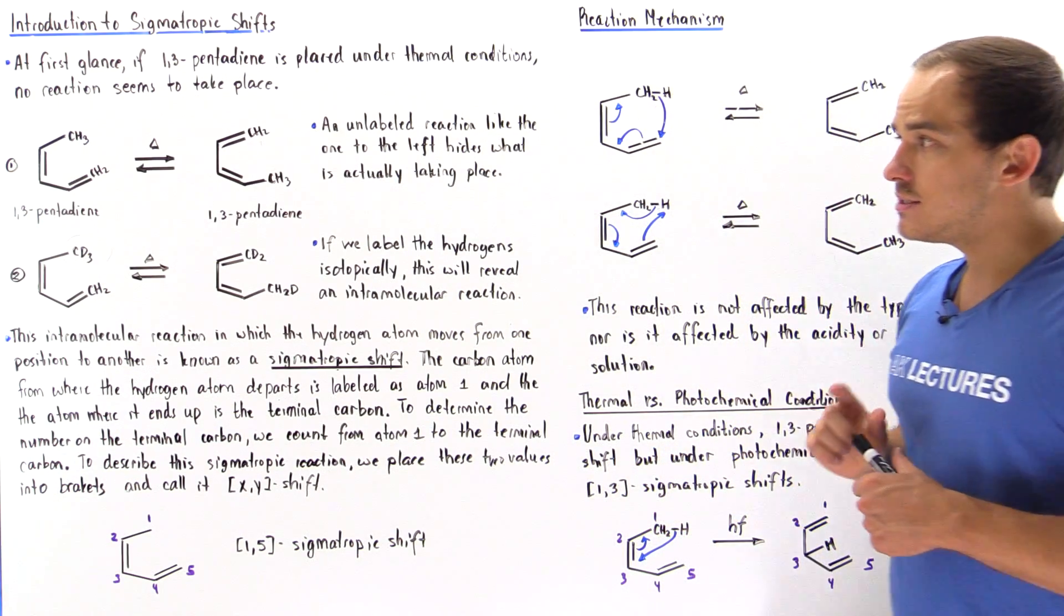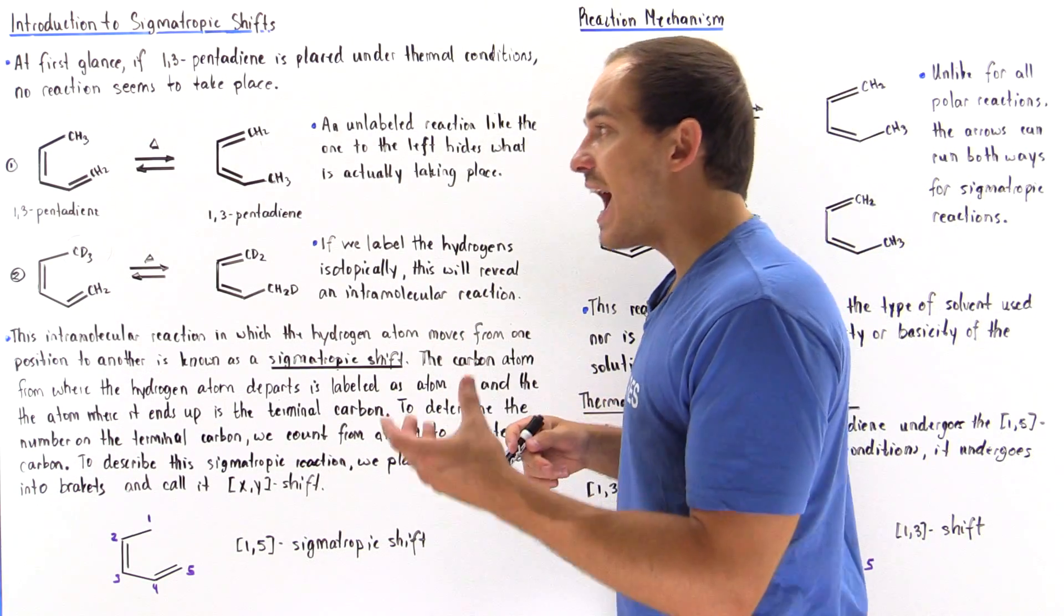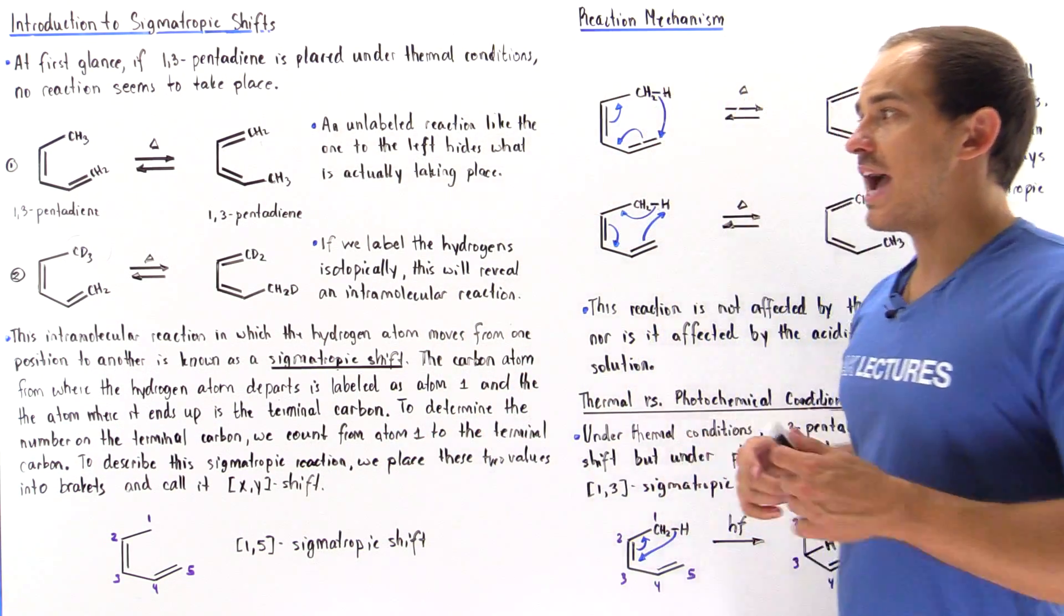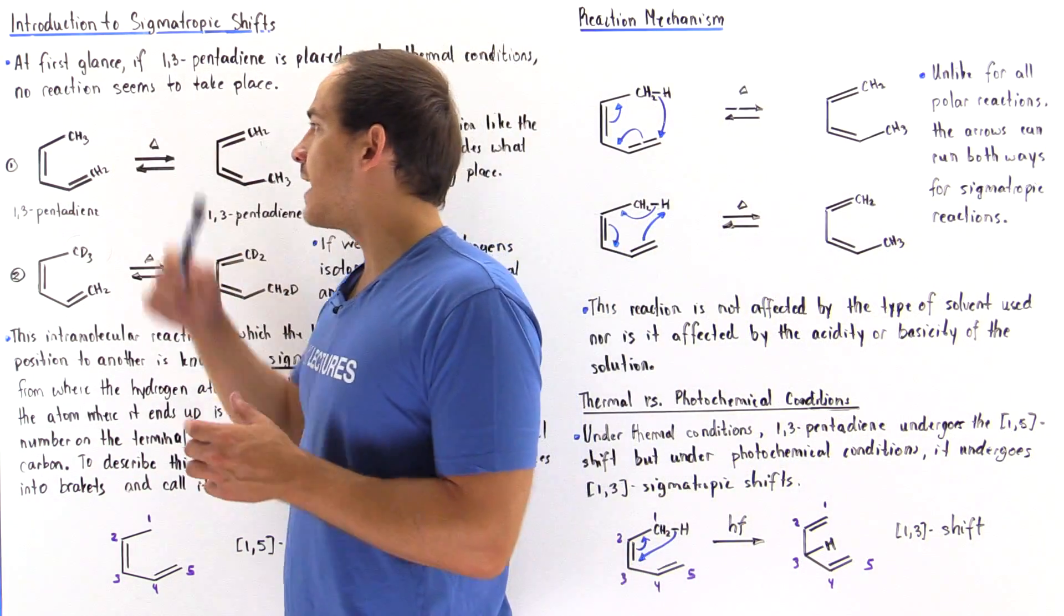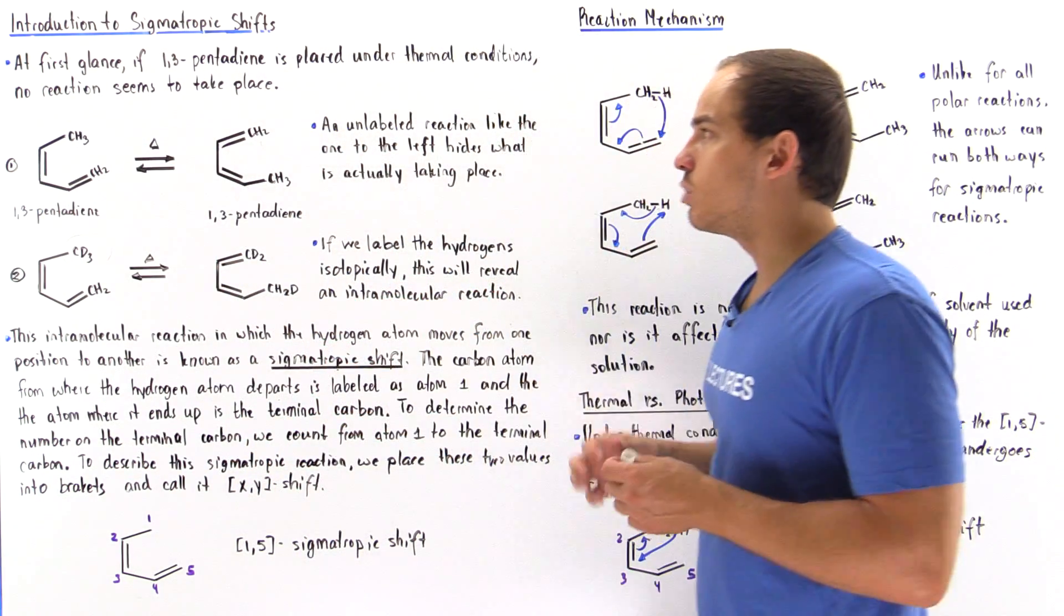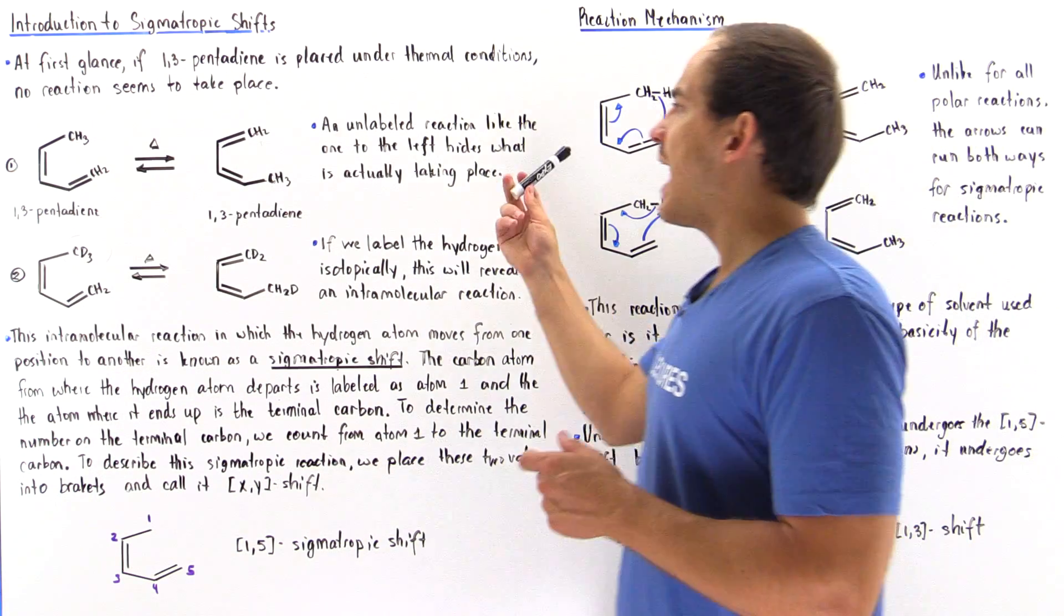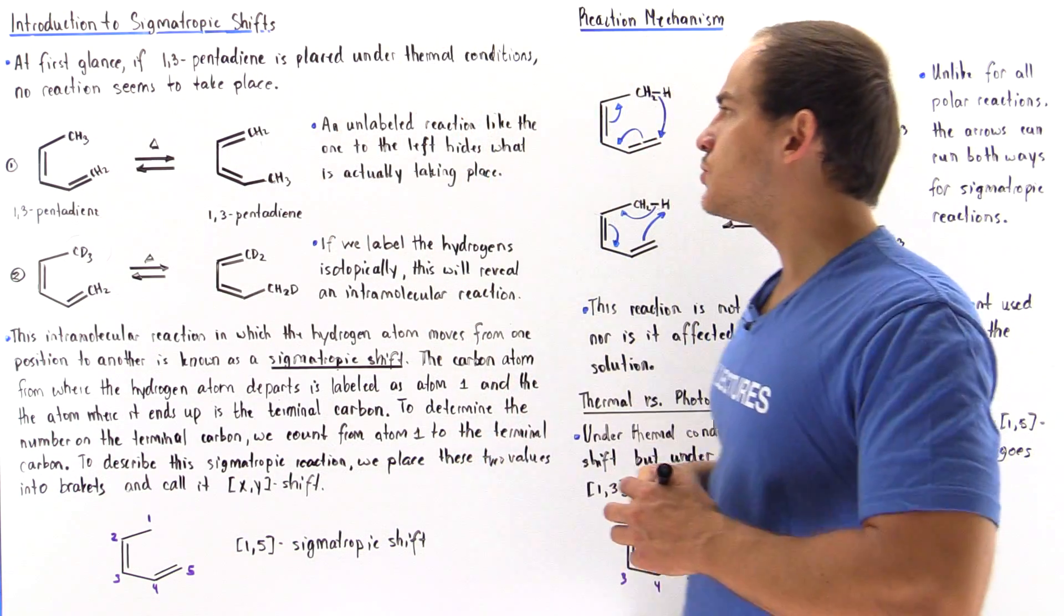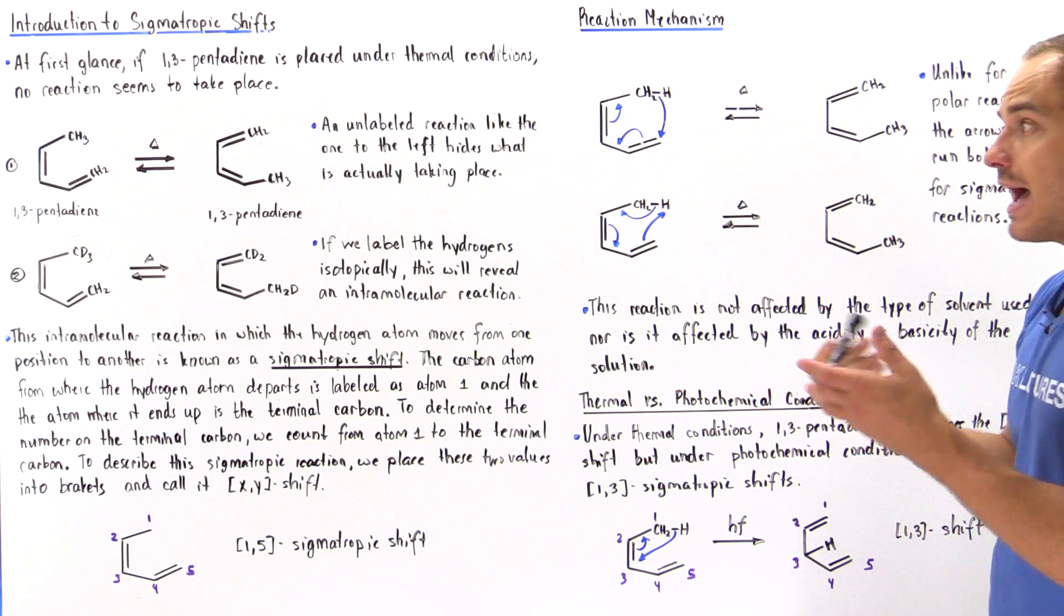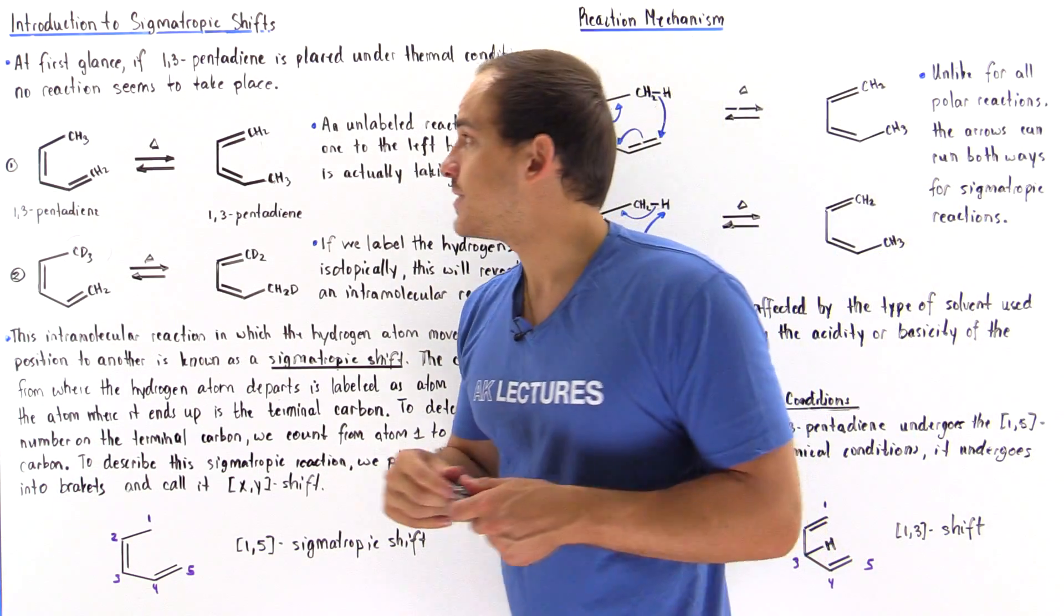Now what actually is taking place is a reaction, an intramolecular reaction, but we can't see it in this case because our molecule is not labeled isotopically. So the fact that we have an unlabeled reaction hides the fact that a reaction is in fact taking place.